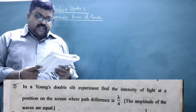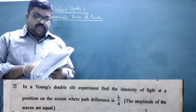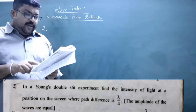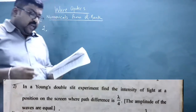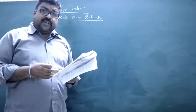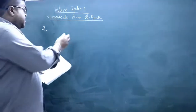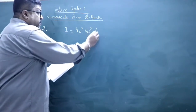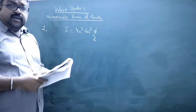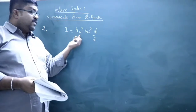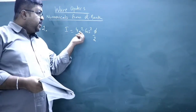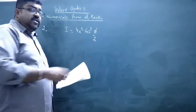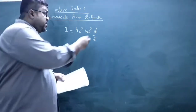Question number two: In Young's double slit experiment, find the intensity of light at a position on the screen where path difference is λ/4. The amplitudes of the waves are equal. In this case, the resultant intensity is given by I = 4A²·cos²(φ/2), where A is the amplitude of the individual waves and φ is the phase difference.